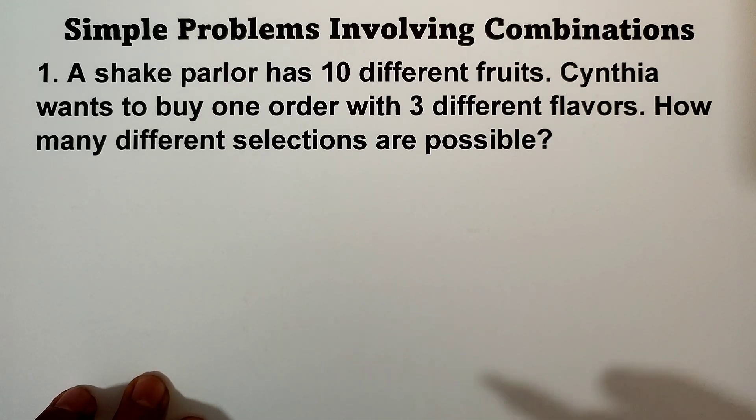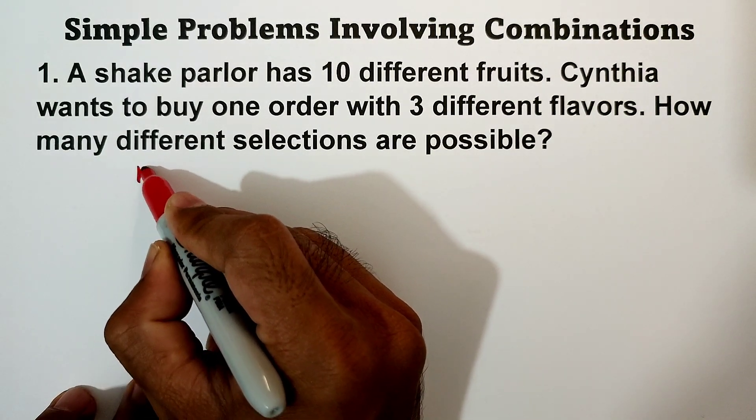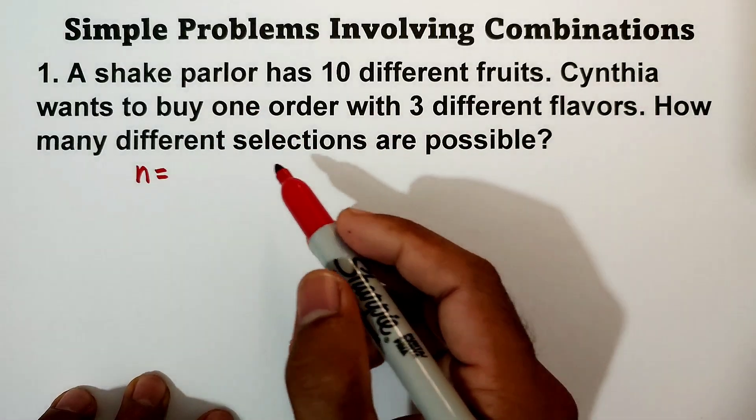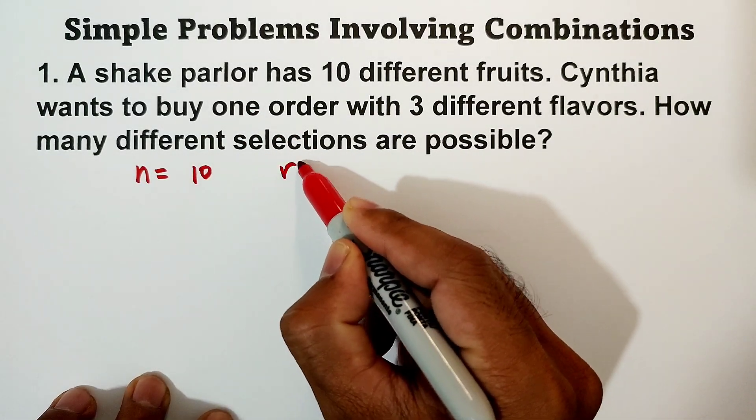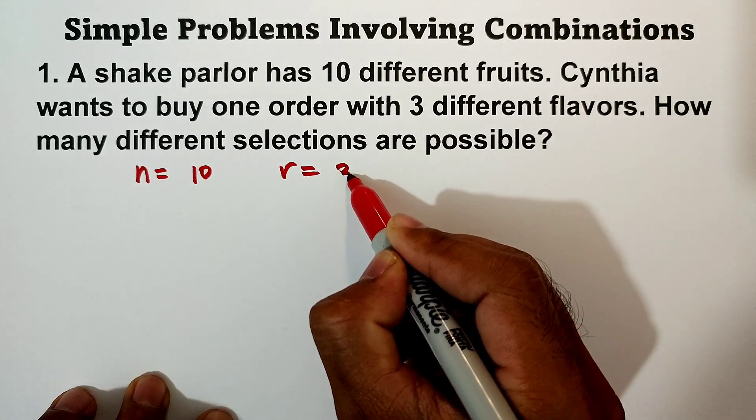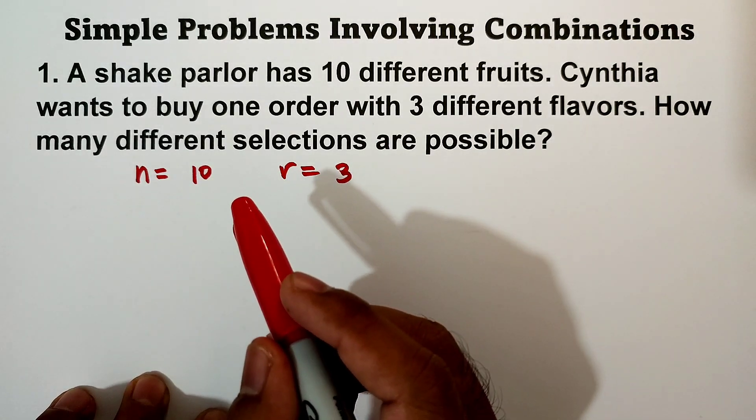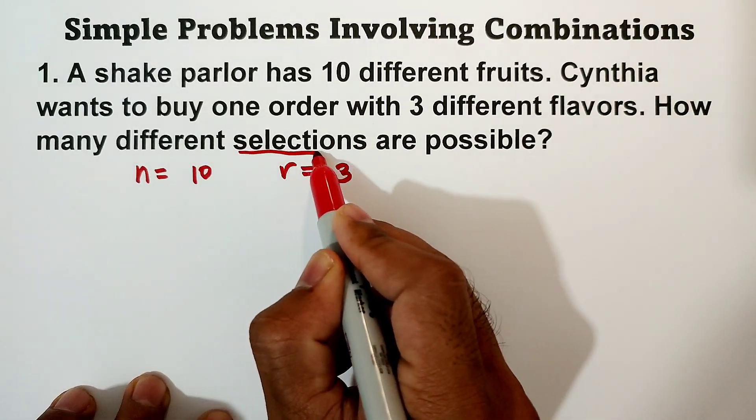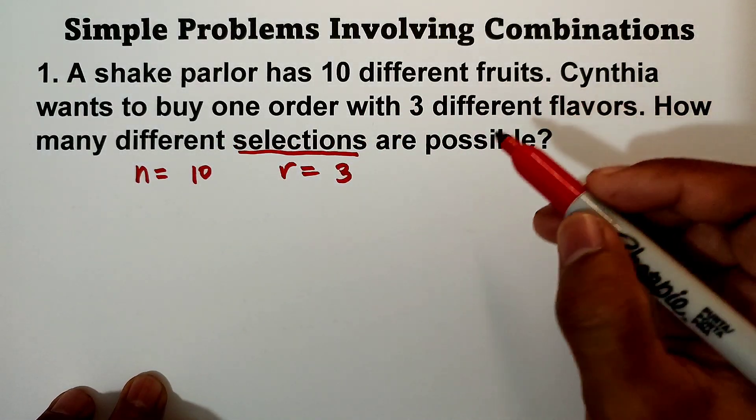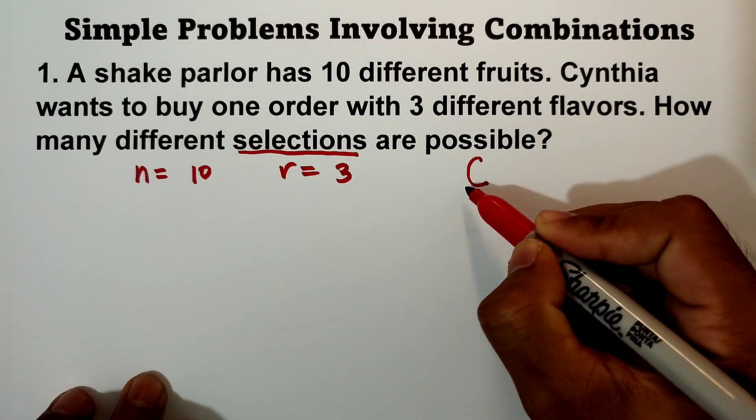So our n, or the number of objects, n is equal to 10, and r is equal to 3. And then of course the word select - we're going to use combination. So combination of 10 objects taken 3 at a time.